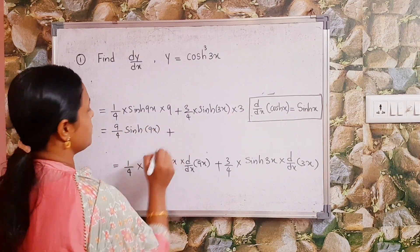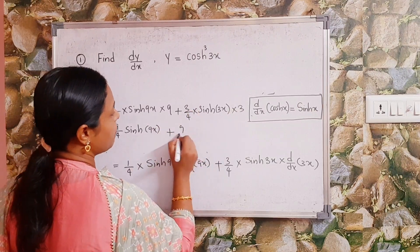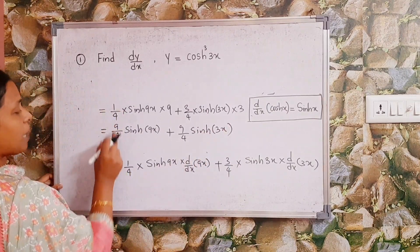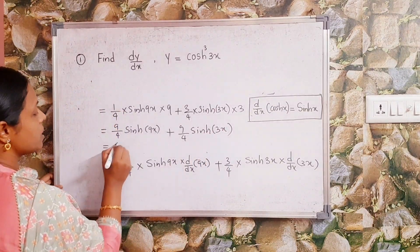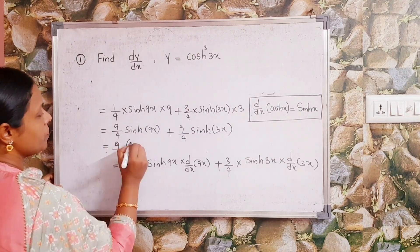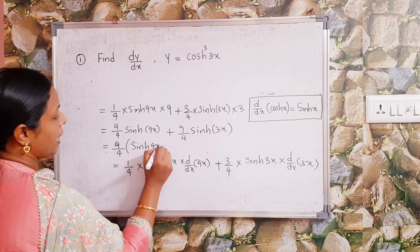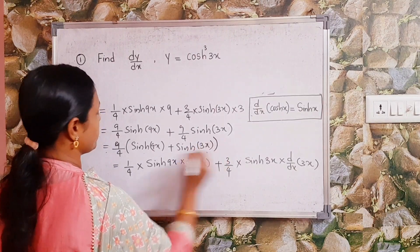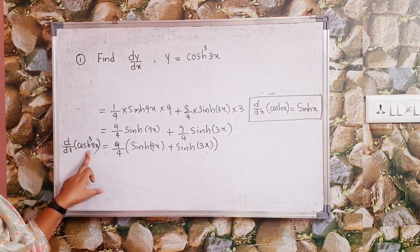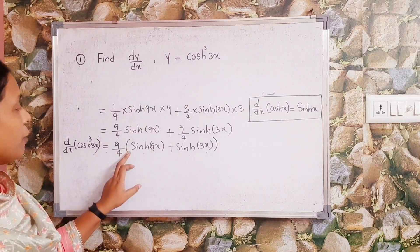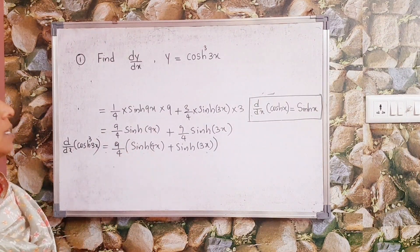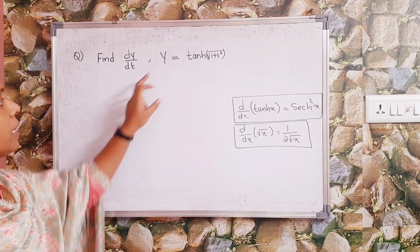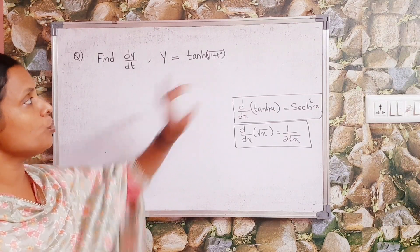That is equal to (1/4) × sinh(9x) × 9 plus (3/4) × sinh(3x) × 3. Therefore, d/dx of cosh³(3x) = (9/4)sinh(9x) + (9/4)sinh(3x).